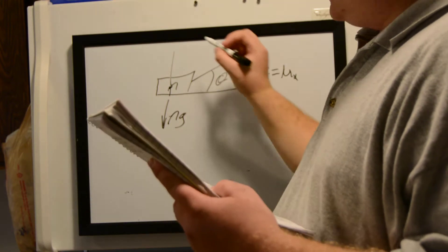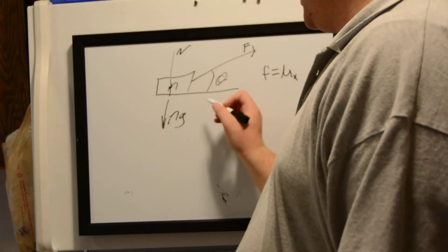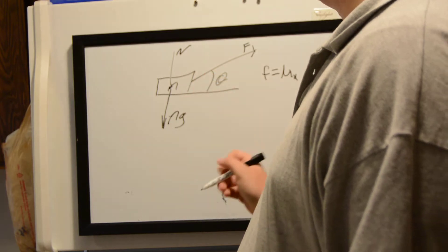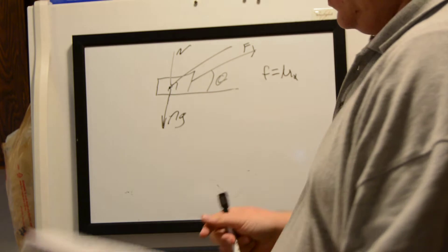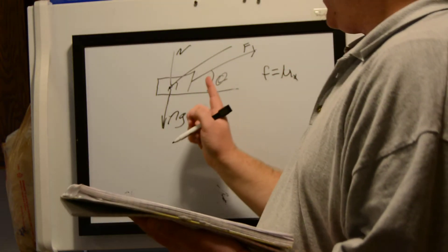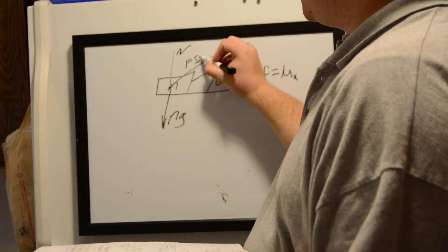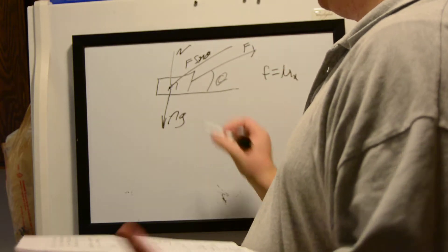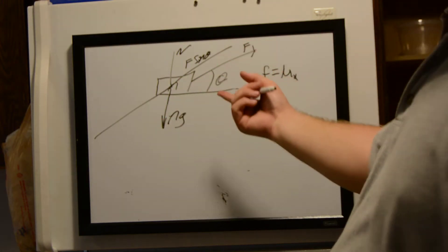That perpendicular force is the normal force N. In the direction of the force, the second axis we need to define is the direction of the force, which is parallel with our rope. Because this does have a y component, that's going to be the magnitude of force times sine theta. And because of Newton's third law, we have our equal and opposite force here.